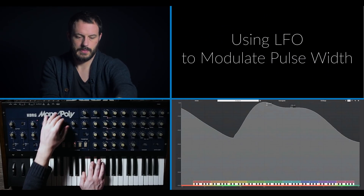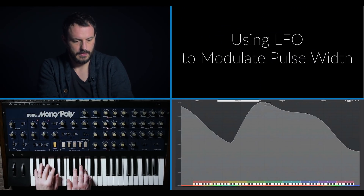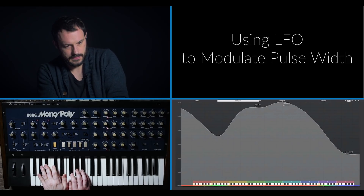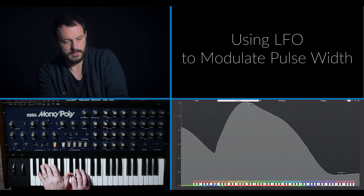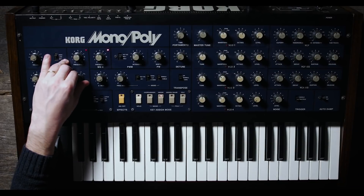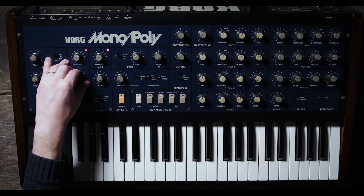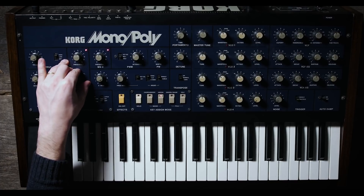A third awesome way to use an LFO is to modulate the wave shape of a square wave — and that's called pulse width modulation. Let's listen to different waveforms of the LFO modulating the wave shape of the square wave.